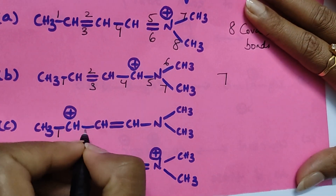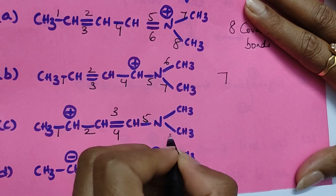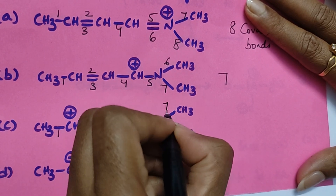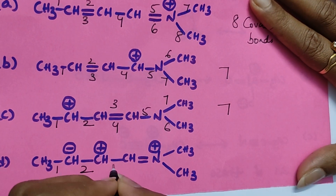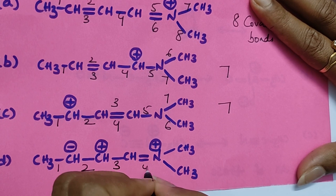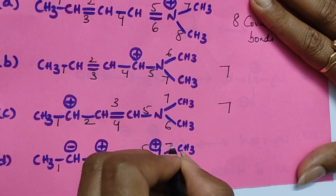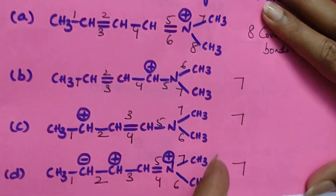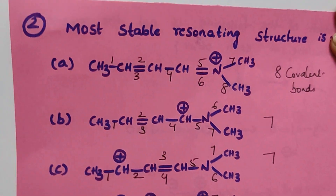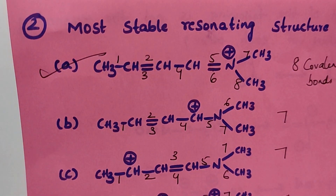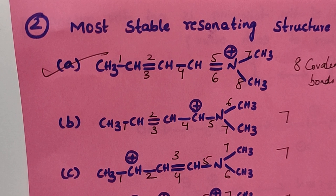Continuing the count for the remaining structures: one, two, three, four, five, six, seven — also seven. So in all four structures, option A has eight covalent bonds and is the correct answer.